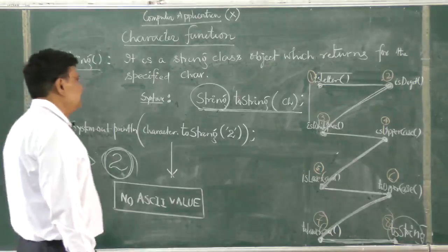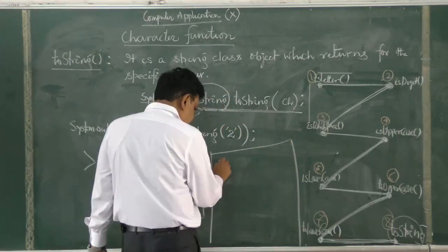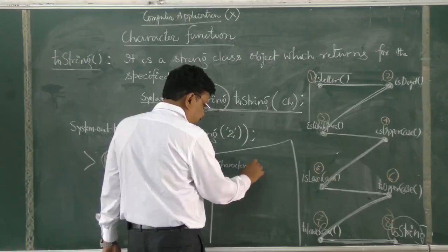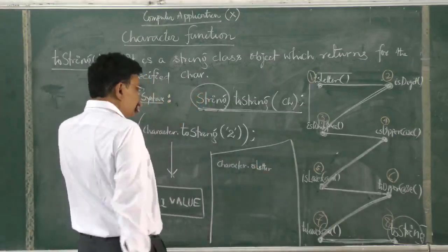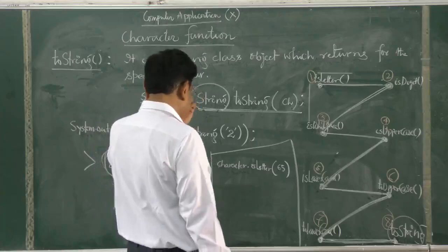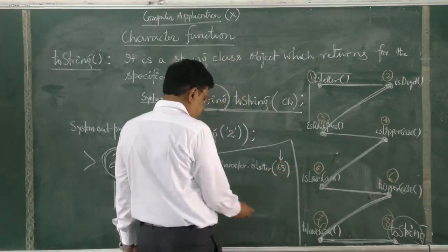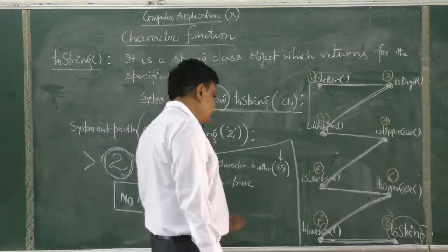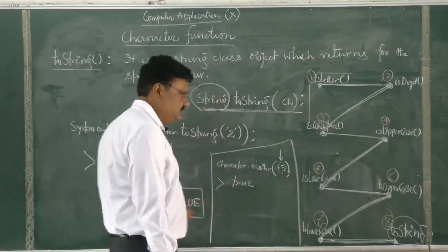Because as we have already discussed, for example with isLetter: if I write Character.isLetter(65) — 65 is the ASCII value of capital A. So this will return true because isLetter accepts ASCII values. The ASCII value of 65 is A, so the answer will be true. In other cases, the answer will be false.